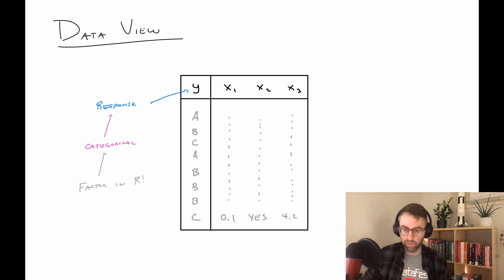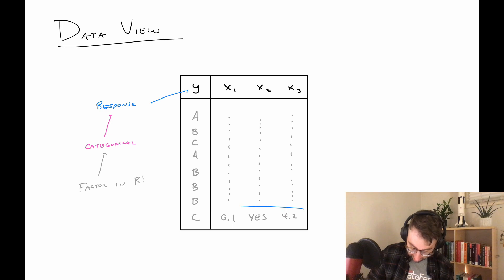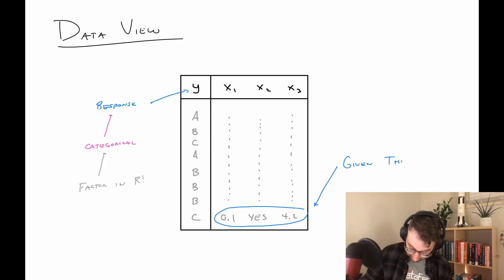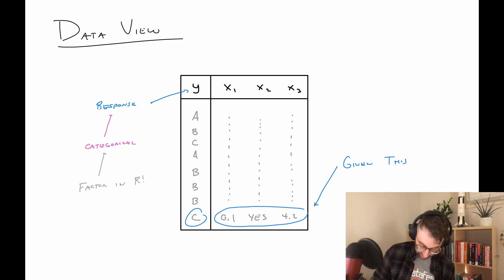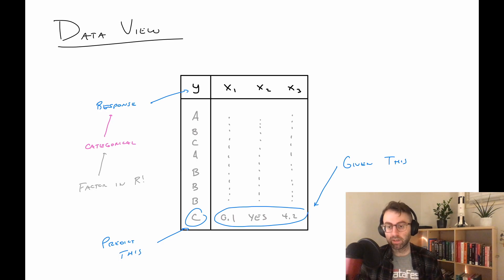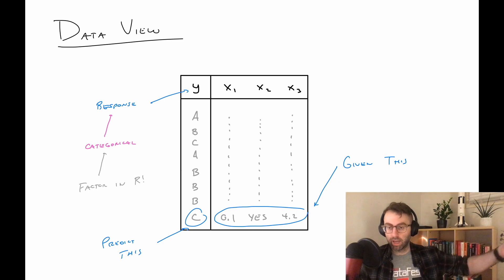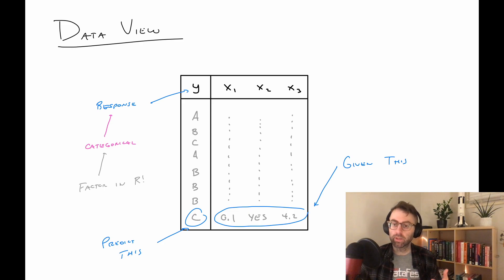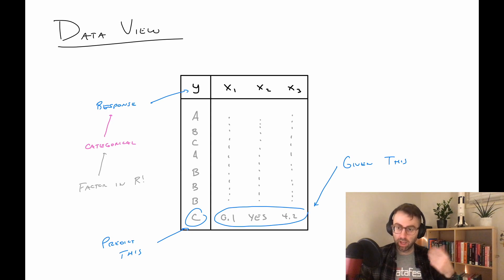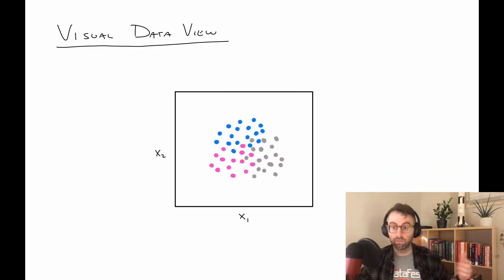So all that said, our mission then will be: given this feature information, what we want to do is try to predict the response. That should have a very similar feel to what we did in regression, except now instead of trying to get a number right, we're trying to get a category right. How do we do this? We want to develop a way to do this automatically given some previous data, and then in some new data, when I only show you the feature information, you can hopefully output the correct value.